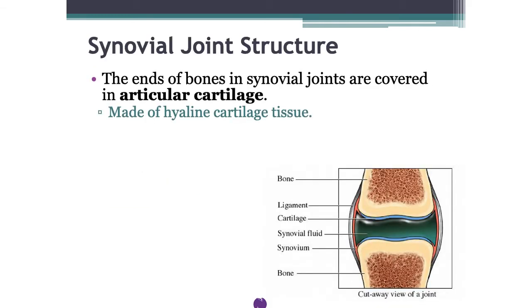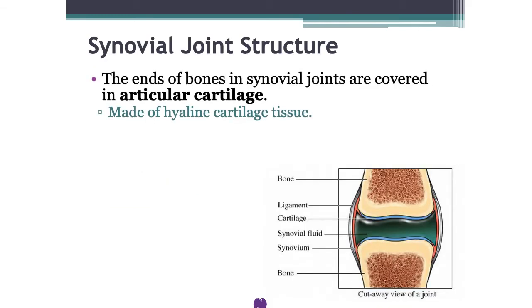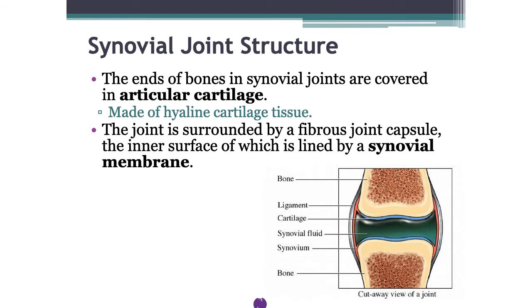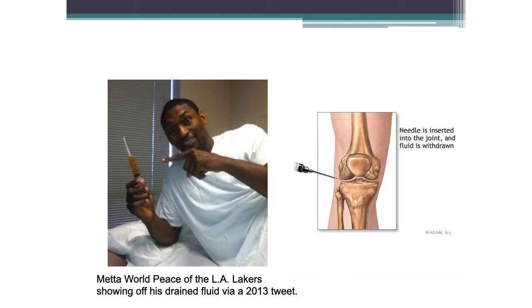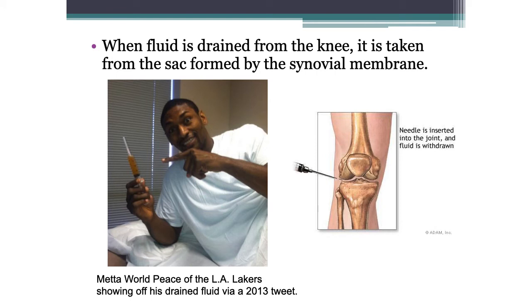In synovial joint structure, the ends of bones are covered with articular cartilage made of hyaline cartilage tissue. The joint is surrounded by a fibrous joint capsule whose inner surface is lined by a synovial membrane, and synovial fluid fills the space between the articular cartilage and the synovial membrane. When fluid is drained from the knee, it is taken from the sac formed by the synovial membrane.